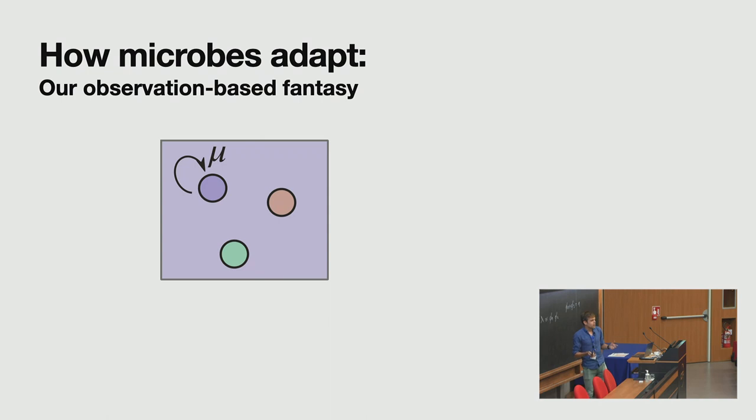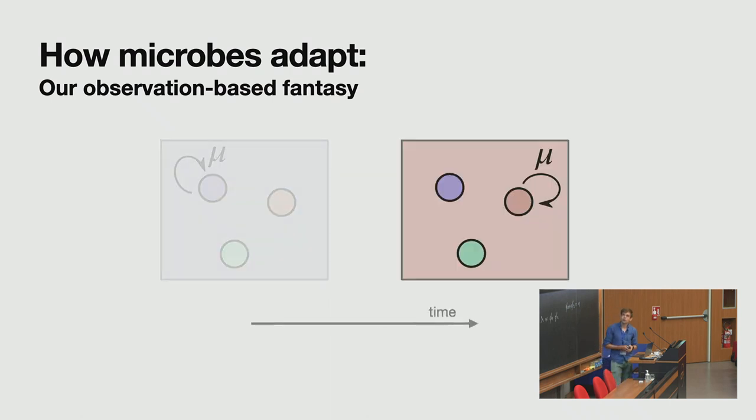So let's take a very simple model system. We just have three phenotypes, a purple, a red, and a green one. And then in the purple environment, as indicated by the background of the square, only the purple one grows. Then over time, of course, the environment can change and we go to a red environment, and now only the red phenotype can change. It's still quite easy. But now we have to come up with some model how the cell is going to adapt and find the right phenotype.